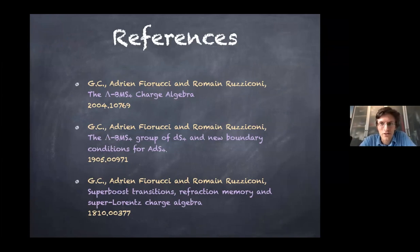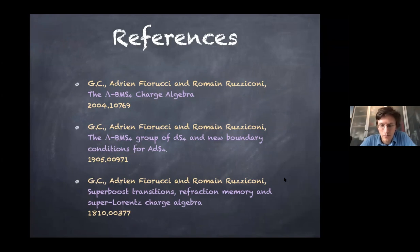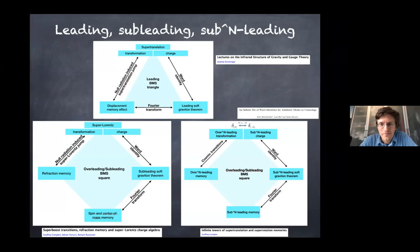This talk is based on three papers I did with two students, Adrian Ferrucci and Romain Rosiconi, both in Brussels. The first one is mostly on flat space, but the two others are on asymptotically AdS spaces, which is what I'm going to talk about today. But first I will review a bit the picture of what BMS is. There has been progress in the infrared structure of asymptotically flat gravity, mainly led by the group of Strominger.